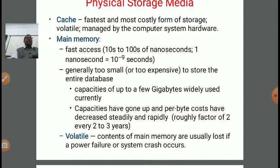Capacities have gone up and per-byte cost has decreased steadily. With time, the cost is reducing and capacity is also increasing — roughly by a factor of 2 every 2 to 3 years. The content of main memory is usually lost if a power failure or system crash occurs. It means main memory is a temporary or volatile memory.